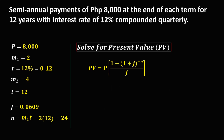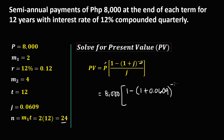For the present value, we use the formula: periodic payment of 8,000 times (1 minus (1 plus J) to the power of negative N) divided by J. Substituting J equals 0.0609 and N equals 24, we have 8,000 times (1 minus (1.0609) to the power of negative 24) divided by 0.0609.